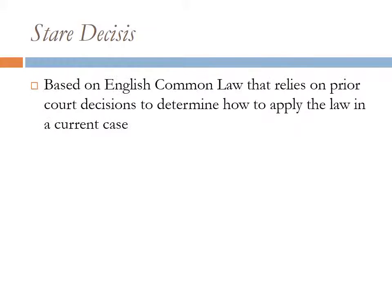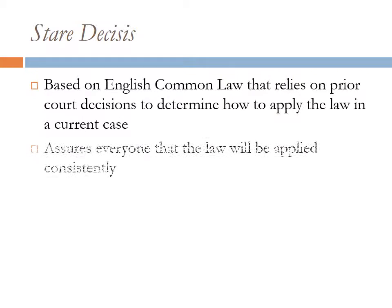The law in the United States is based on a principle called stare decisis. This comes from English common law. The term means 'let the law stand,' meaning that courts rely on prior court decisions to determine how to apply the law in the current case. The judge in the case will make a decision based on prior law, which assures that the law will be applied consistently.